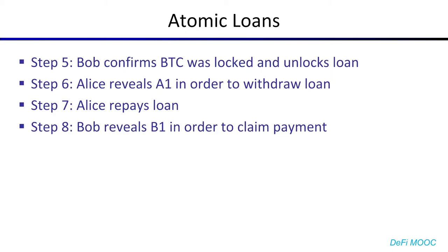Alice can use the loan however she likes, and when she's done she will repay the loan, at which point Bob can claim the repayment, but only if he reveals A1, therefore allowing Alice to reclaim her collateral.